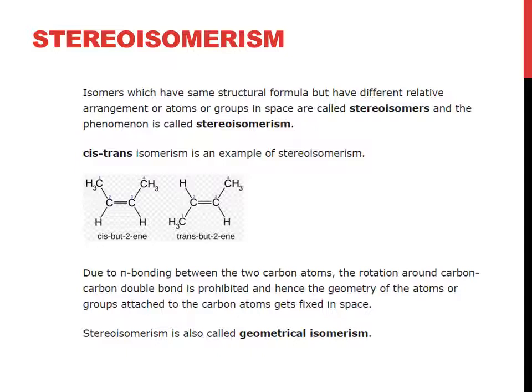Cis-trans isomerism is an example of stereoisomerism; here we take the example of but-2-ene. Cis means the same groups are on the adjacent (same) side. In this case, both CH3 groups are on the same side — at positions 1 and 4 on the left-hand side — that is cis. When they are at positions 1 and 4 but on opposite sides, that is called trans. Due to pi bonding between the two carbon atoms, rotation around the carbon-carbon double bond is prohibited, and hence the geometry of atoms or groups attached to the carbon atoms is fixed in space.